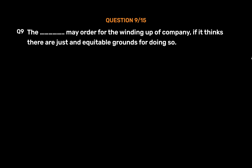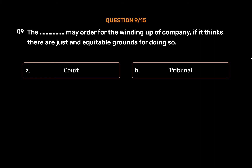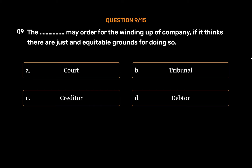Question number 9. The [blank] may order for the winding up of a company if it thinks there are just and equitable grounds for doing so. Option A: Court. Option B: Tribunal. Option C: Creditor. Option D: Debtor. The correct answer is Option B — Tribunal.